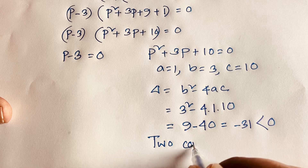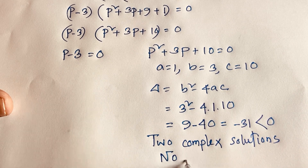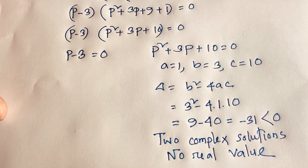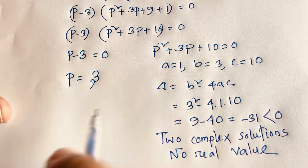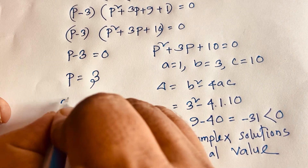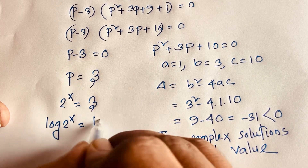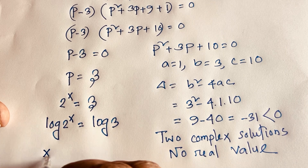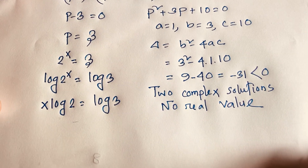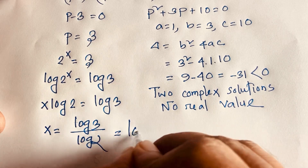The second case gives complex (imaginary) solutions, so there is no real value from it. For the real solution, from p − 3 = 0 we get p = 3. Recalling that p = 2 to the power x, we have 2^x = 3. Applying logarithms to both sides: x·log 2 = log 3. Dividing both sides by log 2 gives x = log 3 / log 2, which equals log base 2 of 3. This is our final answer.